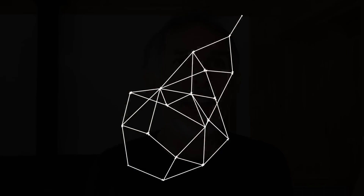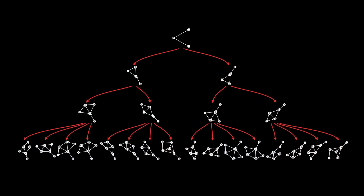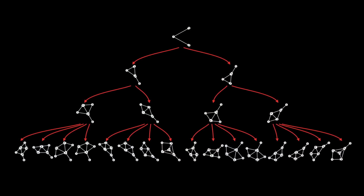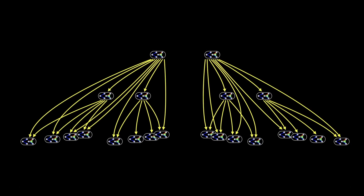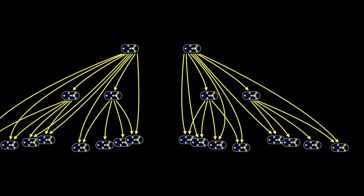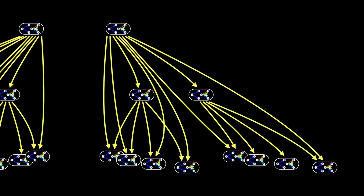I've shown you the hypergraph — it is space and everything in space. And I've shown you the multiway graph — it's every possible evolution of the hypergraph. Now I'm going to show you the causal graph. It captures the causal connections between every possible event in the evolution of the hypergraph.